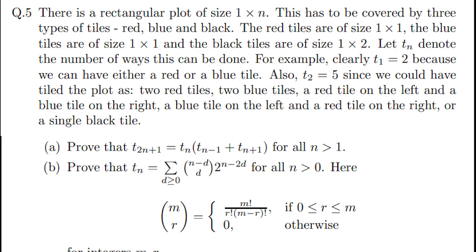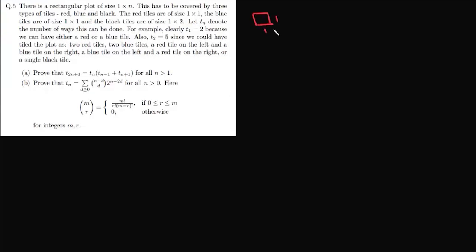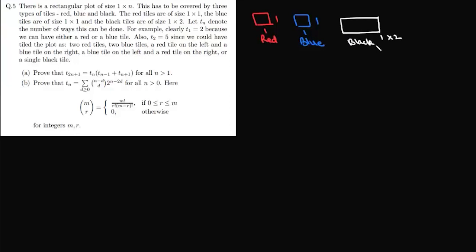There is a rectangular plot of size 1×n which has to be covered by three types of tiles: red, blue, and black. Red tiles have dimensions 1×1, blue tiles are also 1×1, and black tiles have dimensions 1×2.